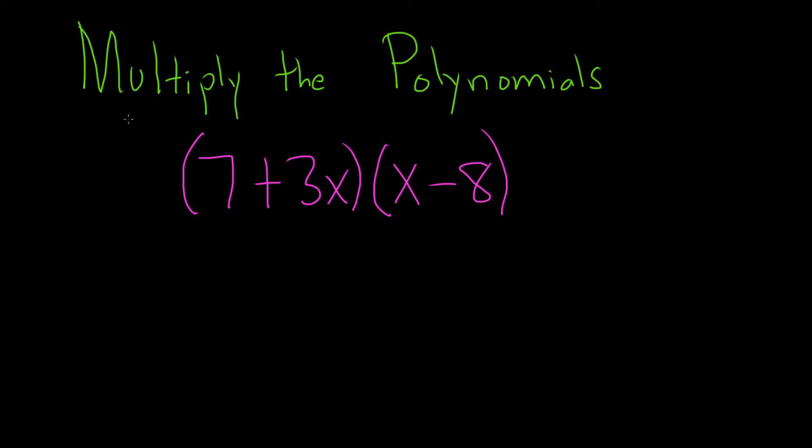Multiply the polynomials. Let's go ahead and work through its solution. Many people use FOIL. I do the same thing, but I do it a little bit differently because I feel like this way is better, because if you had like an extra term here, you could still do it this way.